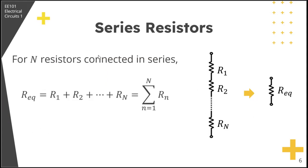To generalize, the equivalent resistance of any number of resistors connected in series is the sum of the individual resistances. As long as they're in series, you can combine them into one, and the value will be the sum of all the resistances of those series resistors.